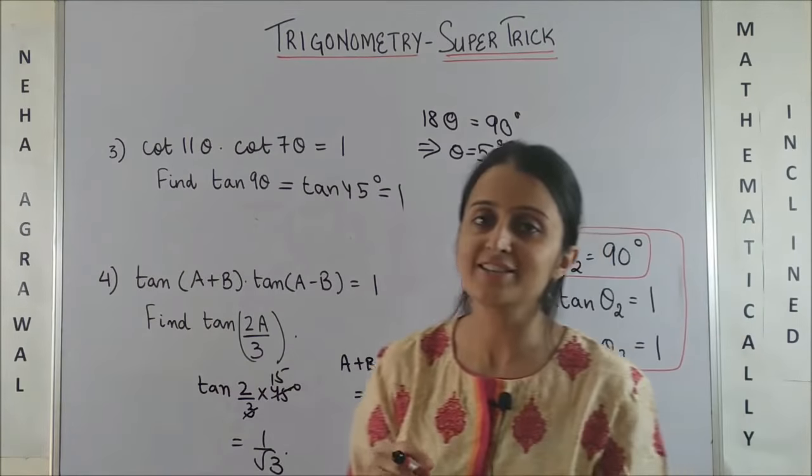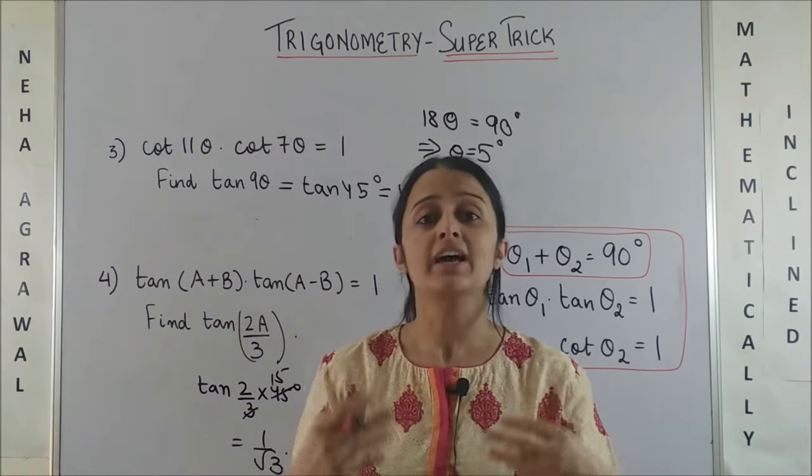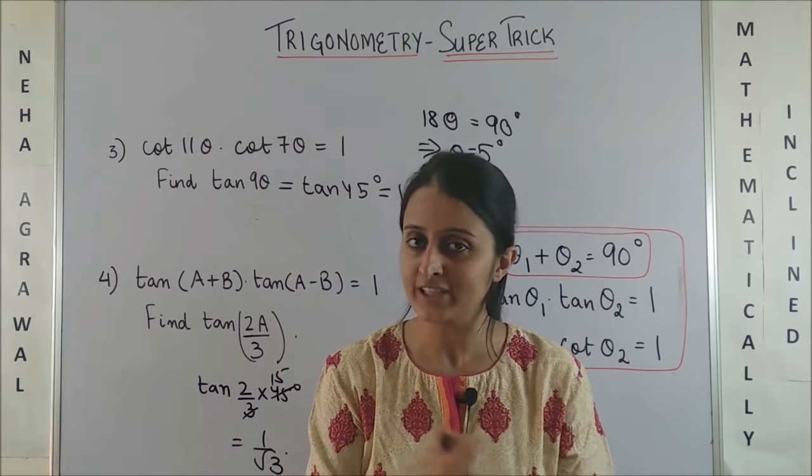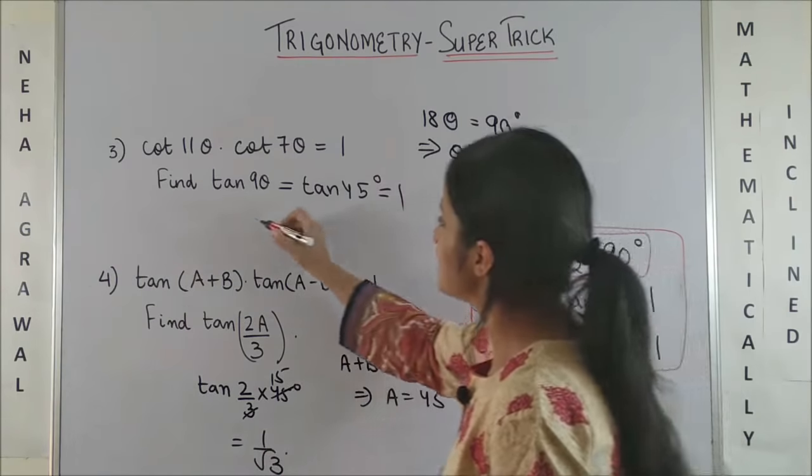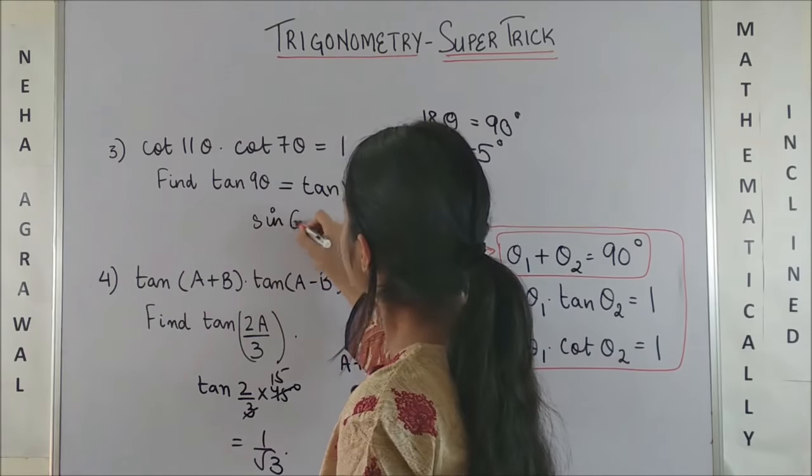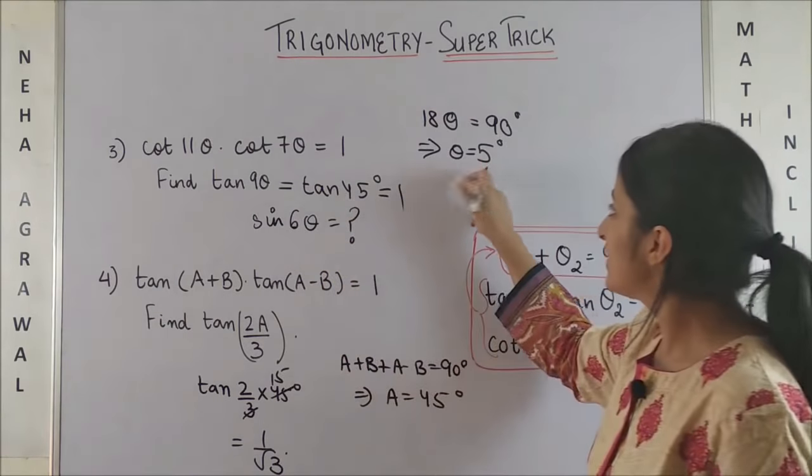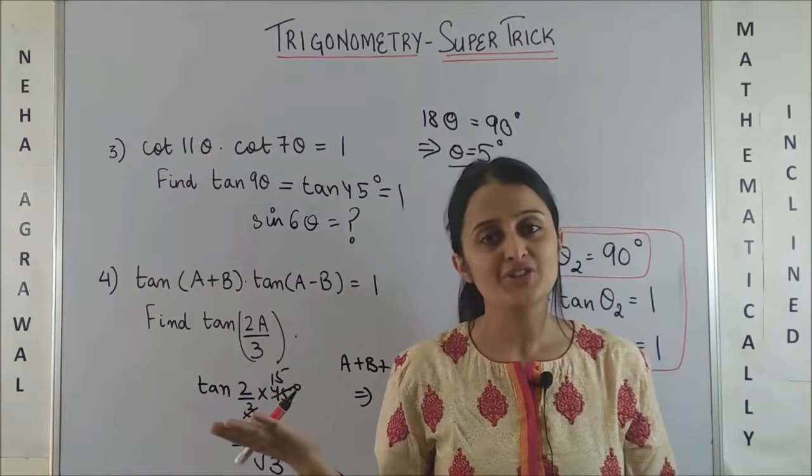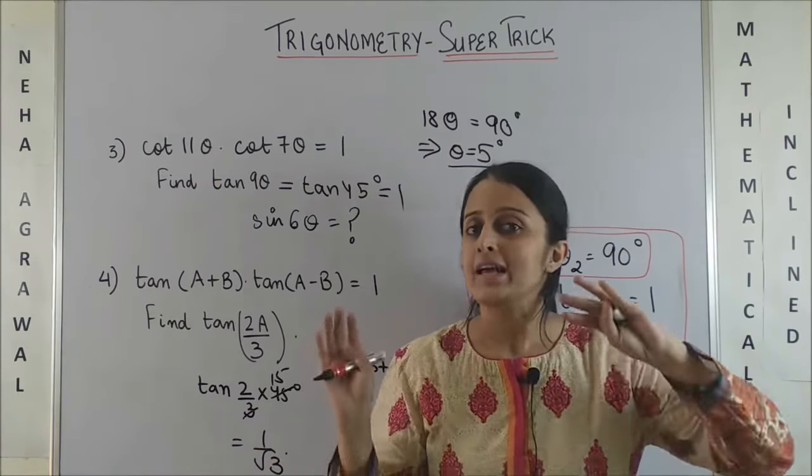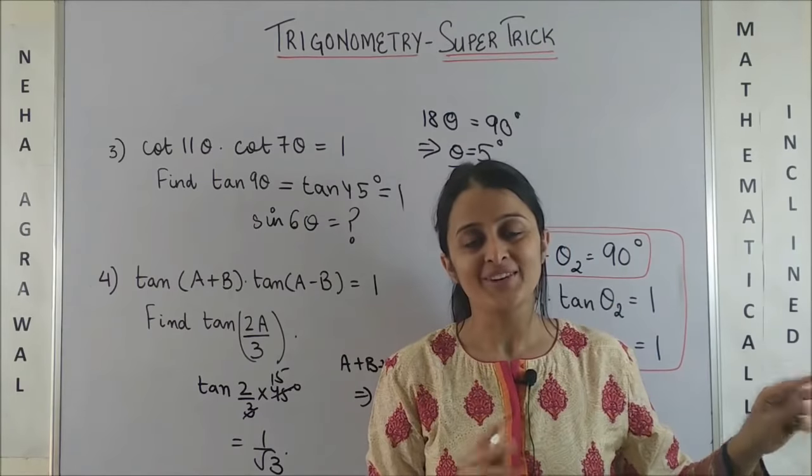Please note it is not necessary if this product is given, I can only ask you the value for tan or cot. I can even ask you for, let's say in this question I could have asked you what is the value for sin 6θ. Once you have arrived at θ, this becomes sin 30°, which is half. So, I can ask any valid ratio.